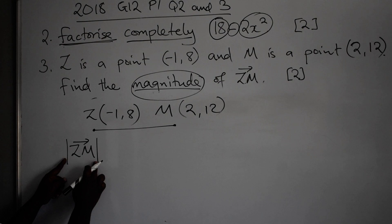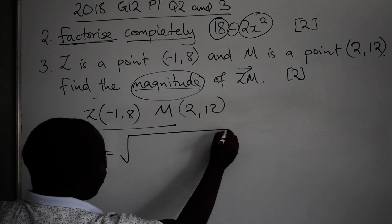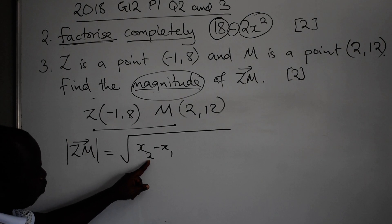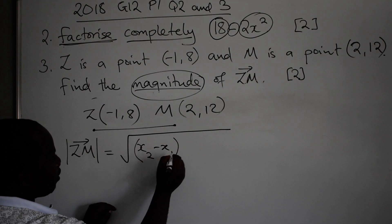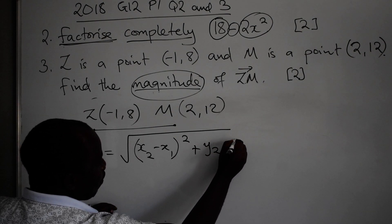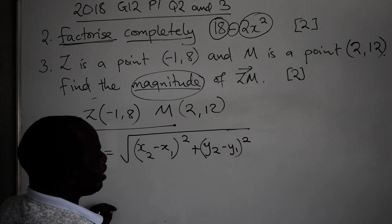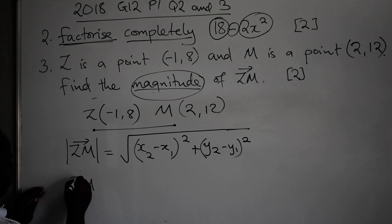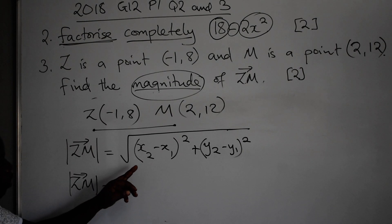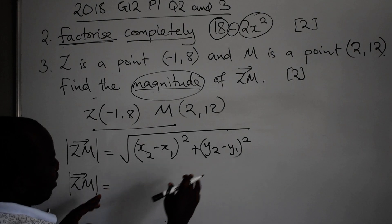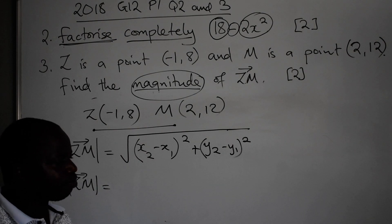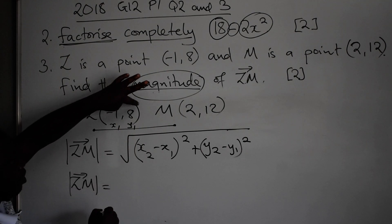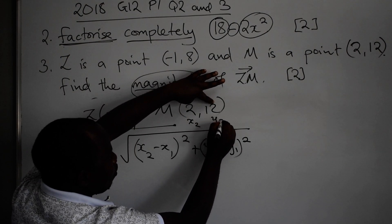This is the way we write it: the magnitude of ZM. Since it is distance or magnitude, you have to put modulus. Without modulus it means you are just calculating the vector ZM, but they are asking the magnitude of the vector ZM. So you put the modulus, then equal to square root. The formula is: x2 minus x1, put them in brackets, squared, plus y2 minus y1, put them in brackets, squared. Your first number in each point is x1 and y1, and in the other point x2 and y2. Then substitute.